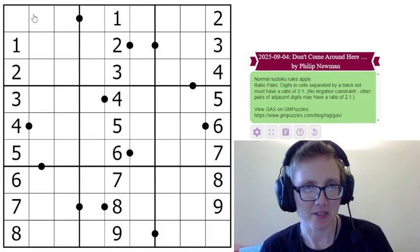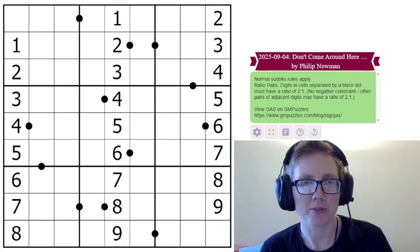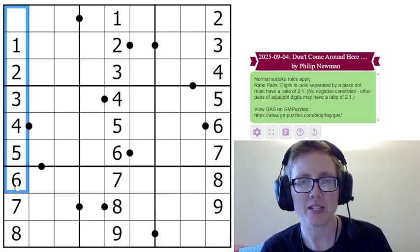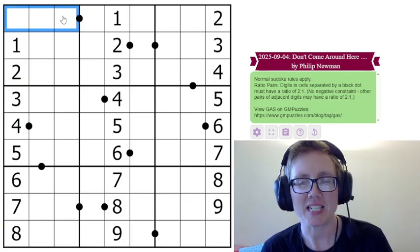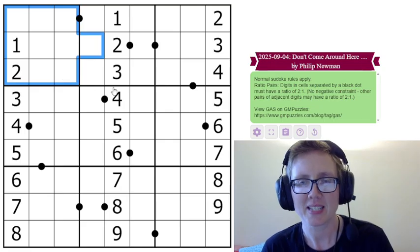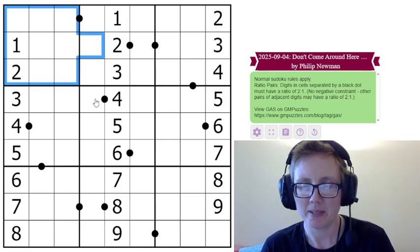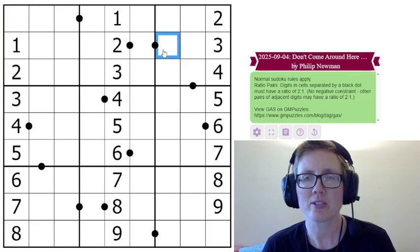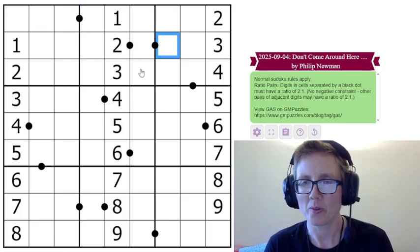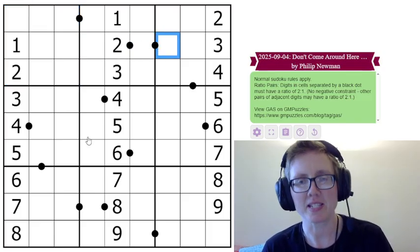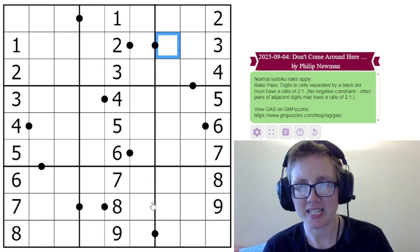This is a ratio pair Sudoku, so we have normal Sudoku rules replacing the digits 1 through 9, ones each in each row, each column, and each outlined 3 by 3 region. In addition to that we have some black dots in the grid, and black dots indicate the two digits on either side of them are in a 1 to 2 ratio, or in other words one of them is twice as big as the other. And that is it.